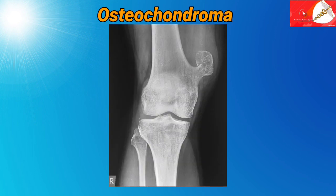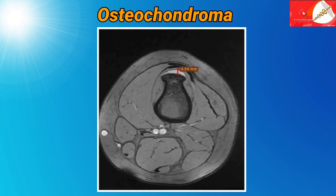In this radiograph, here you can see growth on the medial aspect of the distal femur, away from the epiphysis, and that is pedunculated. Cartilaginous cap of osteochondroma is seen on MRI and CT.